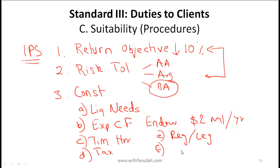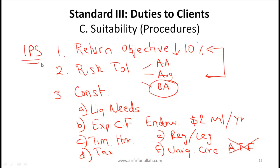It's important to understand the unique circumstances of your client. For example, your client might tell you that he does not want to invest in stocks that deal with alcohol, tobacco, and firearms - that would be a unique requirement. All this material needs to be documented in the Investment Policy Statement, and this essentially drives the suitability of investments. The ultimate objective is that investments you make for your clients should be suitable for your clients.